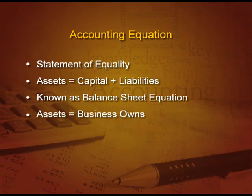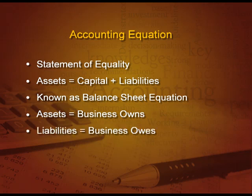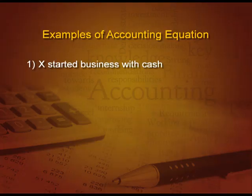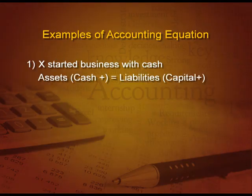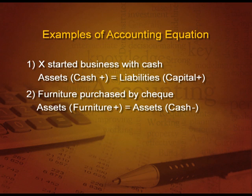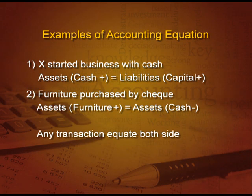Assets are what the business owns, and liabilities are what the business owes — that is, the business has to give it back. For example, Mr. X started business with cash: cash (asset) will increase and capital will also increase. In the second example, furniture purchased by check: one asset, furniture, increases and another asset, bank, decreases — so any transaction will equate both sides.